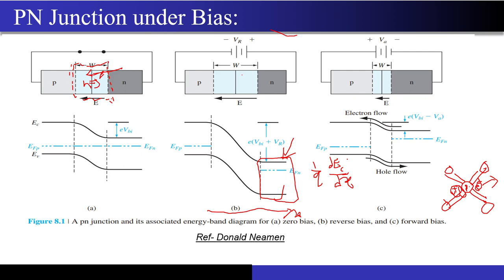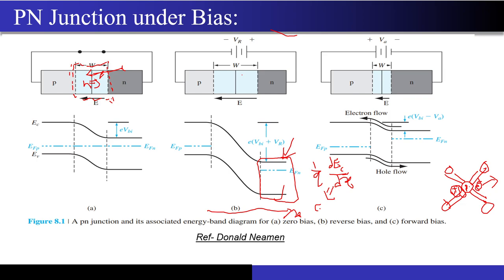Consider the quantity (1/q)(dEc/dx). This slope of the energy band diagram represents the electric field. Since the energy band diagram is flat (horizontal) in the quasi-neutral regions, dEc/dx equals zero there, meaning the electric field in those regions is also zero.